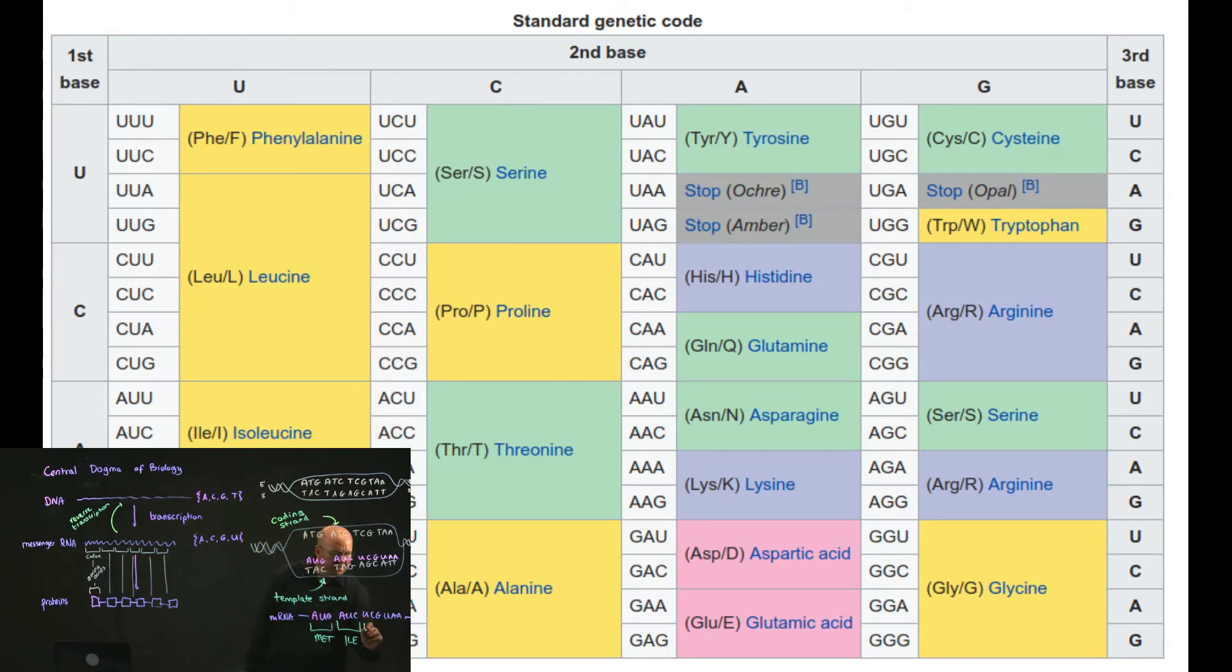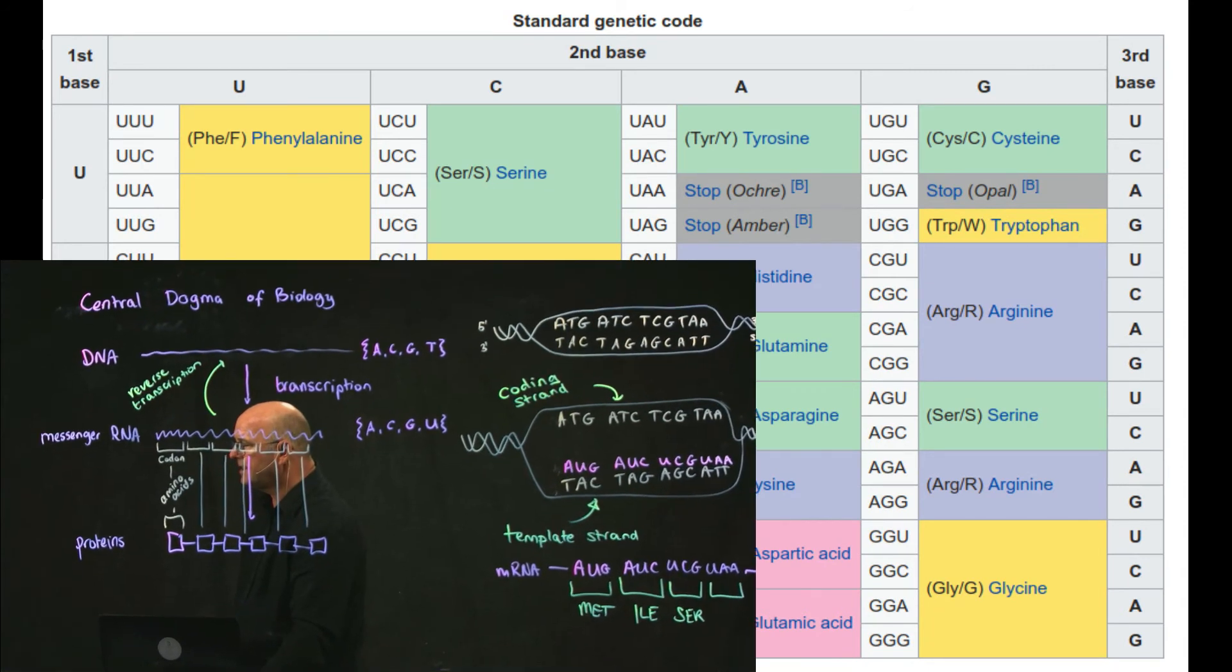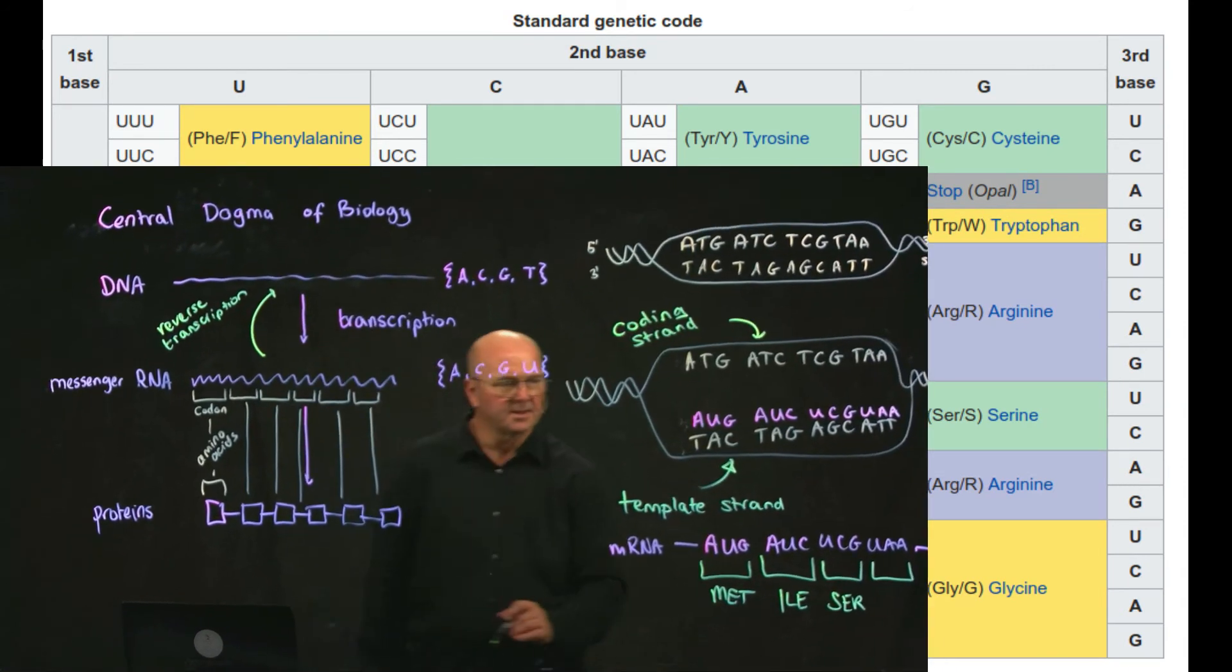U, C, G: U in the first position, C in the second position, G in the third position becomes serine. And U, A, A, which is U in the first position, A in the second position, and A in the third position, is a stop codon.